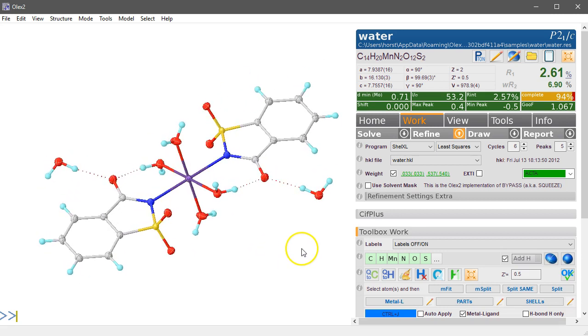I hope this cleared up the matter a little bit. So the formula unit is something that you really want to choose as a chemist. And you can adjust that with the value of Z prime, which you can adjust in toolbox work. And then Olex 2 will look after the rest. Thanks for using Olex 2.